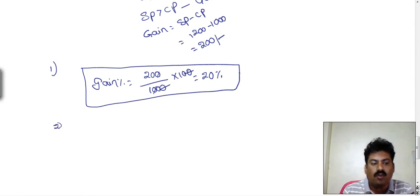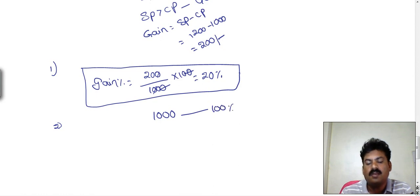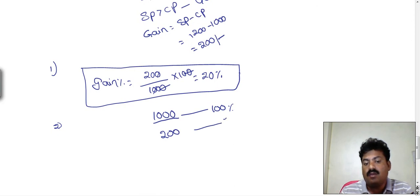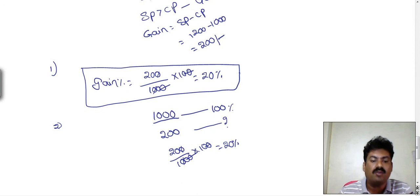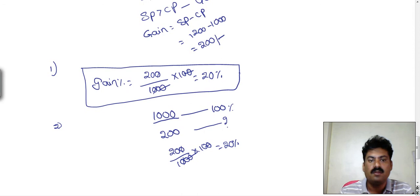In the second mechanism: the 1000 rupees invested is treated as 100% investment. Comparing the gain of 200 with the cost price, we calculate 200 divided by 1000 into 100, which equals 20% profit. Both methods give the same result. This concludes the first example, and next we will look at a loss example.